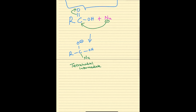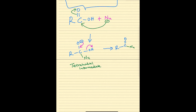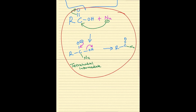Under basic conditions, the next step involves the minus charge on oxygen coming back to form a double bond, while at the same time the OH group leaves as OH minus, resulting in a double bond to that oxygen. We've now lost the OH and are only left with the nucleophile.